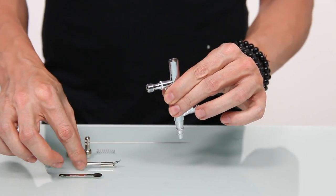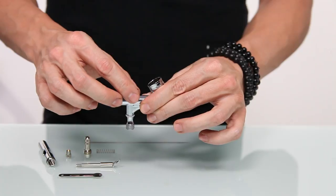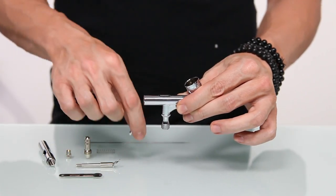Take out the needle chucking guide, and then to remove the trigger, lift it up and give it a quarter turn. This will release it from the body.